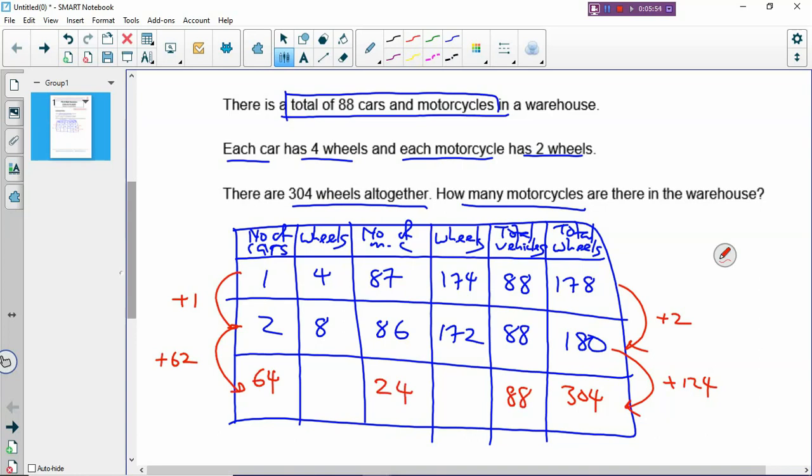How do you know whether you are correct? You add up the wheels and see whether it gives you the same total. So if there are 64 cars, then 64 times 4. You get 256 wheels. And if there are 24 motorcycles, you times 2. That will give you 48 motorcycle wheels. And then you plus them together. So you have 256 plus 48. And you get the same total number of wheels. So there are 24 motorcycles in the warehouse.